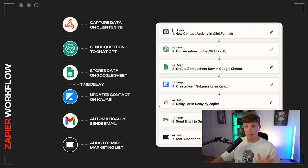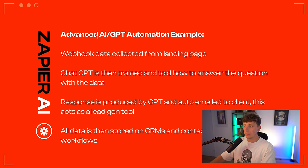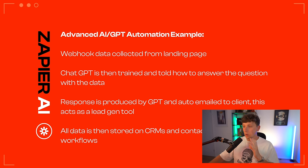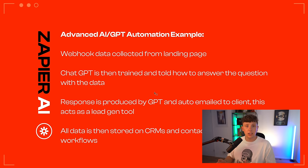We're also going to be rebuilding this and I'm going to show you the exact lead gen tool that we use, so you can literally copy it. To summarize the advanced AI GPT automation: webhook data collected from a landing page is sent to ChatGPT, that bot is trained on how to answer the question with the data, a response is produced by ChatGPT and auto-emailed to the client. All the data is then stored on CRMs and contact info added into the workflow.